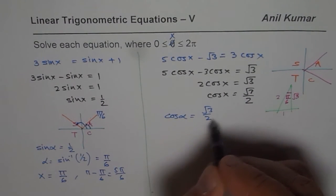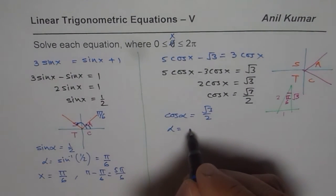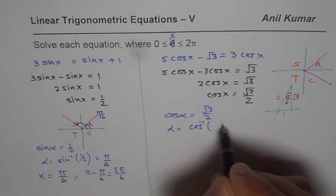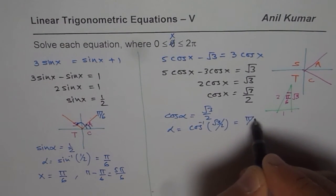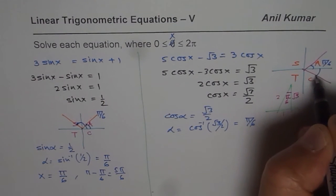So we know here that alpha equals, you could use calculator, cos inverse square root 3 by 2, we will get pi by 6. So that is the acute angle, pi by 6. The other answer is 2pi minus pi by 6.